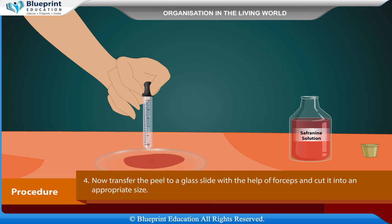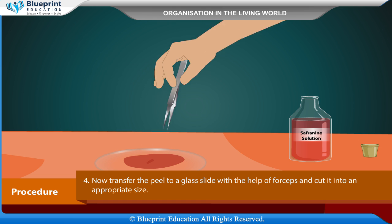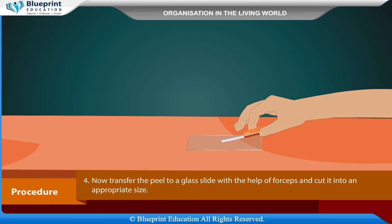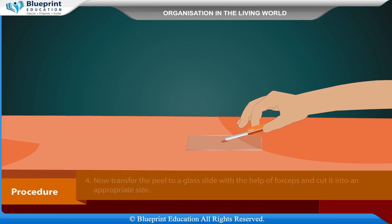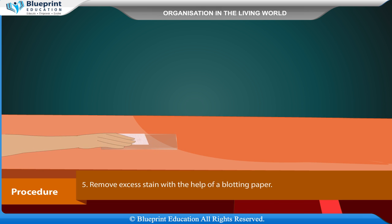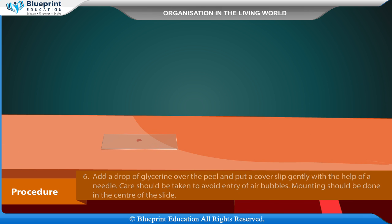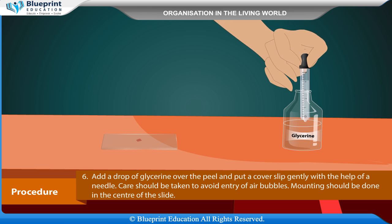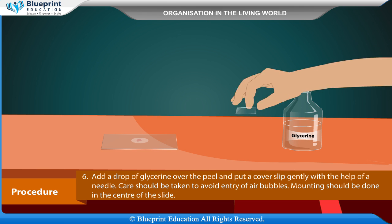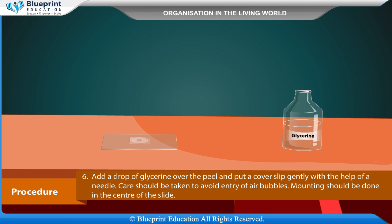Transfer the peel to a glass slide with the help of forceps and cut it to an appropriate size. Remove excess stain with the help of blotting paper. Add a drop of glycerine over the peel and put a cover slip gently with the help of a needle. Take care to avoid entry of air bubbles.